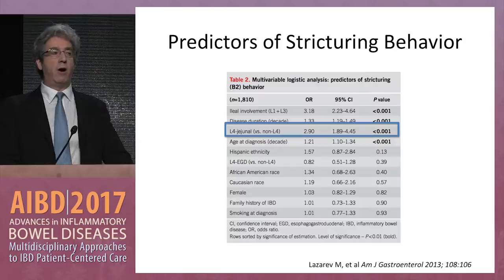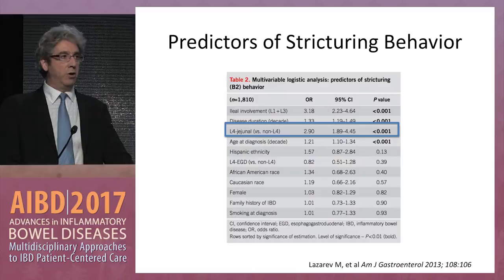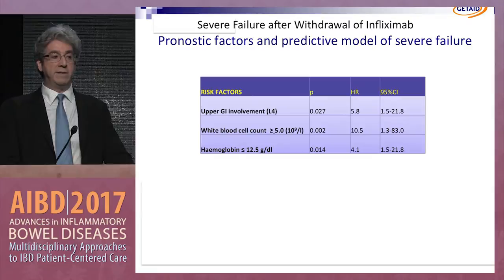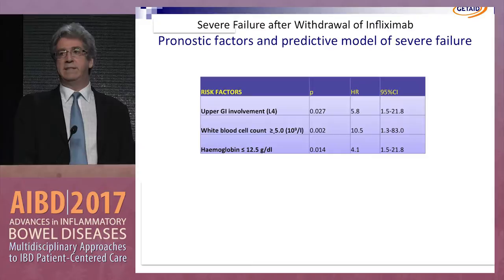We have not yet routinely looked for jejunal disease, but if we do look because the patient is not entirely well — they've had adequate ileal colonoscopy and adequate cross-sectional imaging but are not entirely well, at least biochemically — a capsule endoscopy would be helpful in telling us whether this patient requires yet more aggressive therapy.